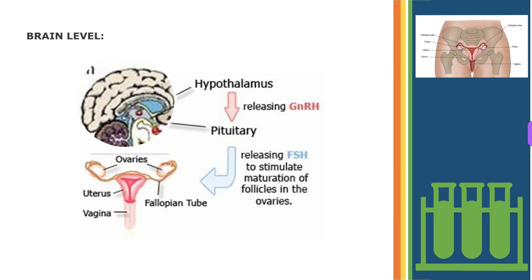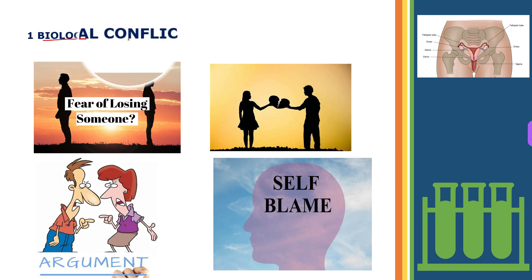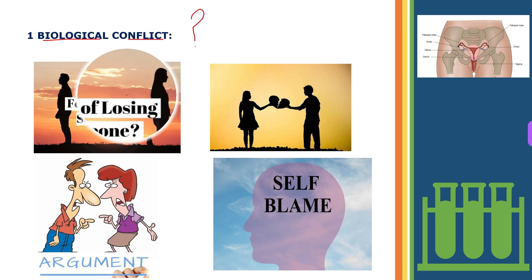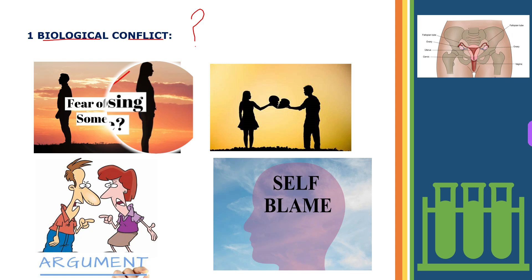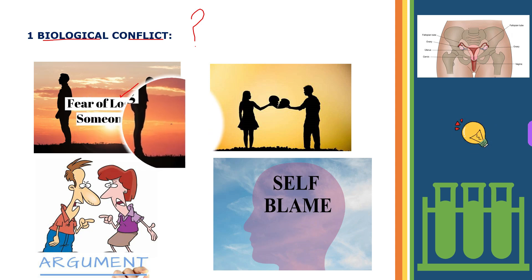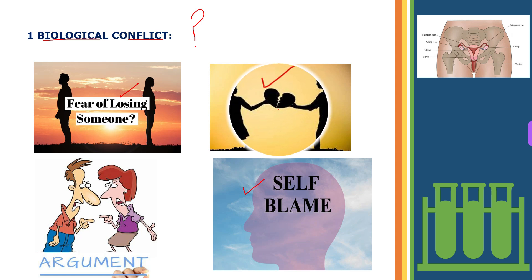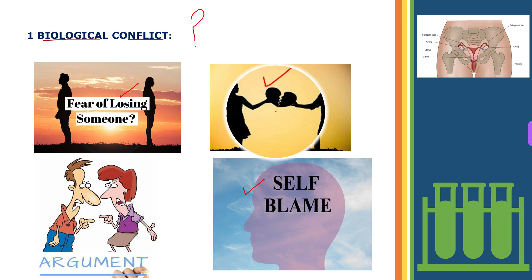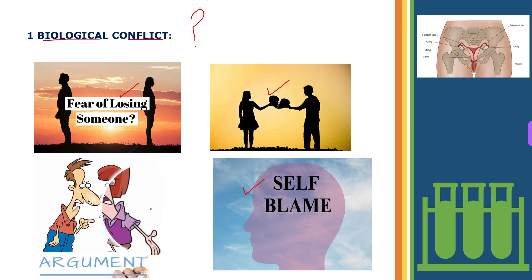Now we will discuss the biological conflict in the ovaries. The biological conflict linked to the ovaries is a loss conflict concerning the loss of a loved one. The loss conflict related to the female germ cells is more primal in nature. The fear of losing a beloved person can already trigger the conflict, and the same holds true for the loss of a pet. Constant self-blaming following a breakup or the death of someone close can keep the conflict active. Women also suffer loss conflict after miscarriages or abortions, and a loss conflict can be activated through an argument, betrayal, or unfaithfulness of a partner or a friend.